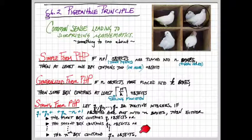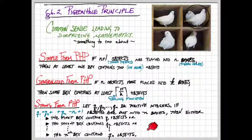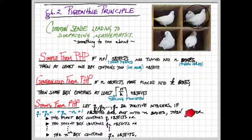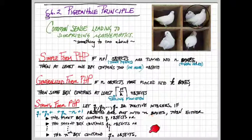So the generalized form sort of has us filling the boxes equally. The strong form allows us to choose how our boxes are forced to be filled. It's choosing what pattern we're looking for.